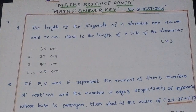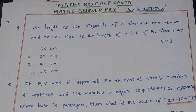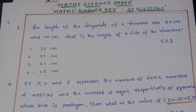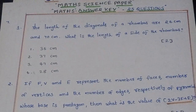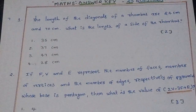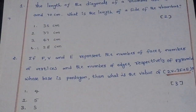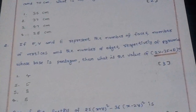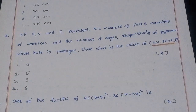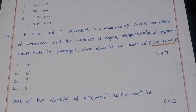First question: The length of the diagonals of a rhombus are 24 centimeters and 70 centimeters. What is the length of a side of the rhombus? The correct answer is option 2: 37 centimeters.